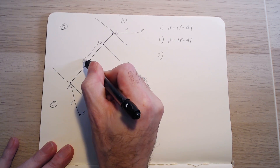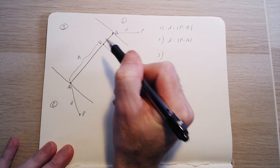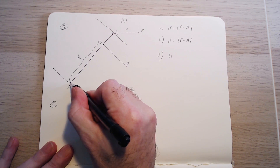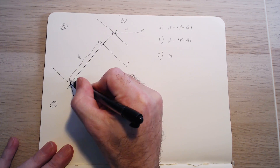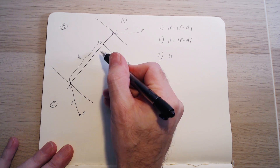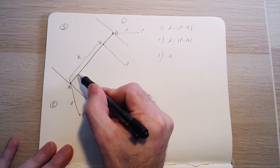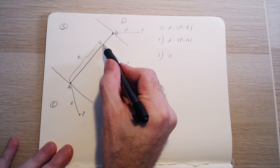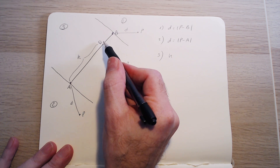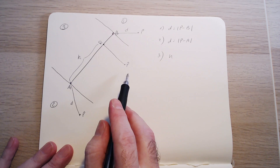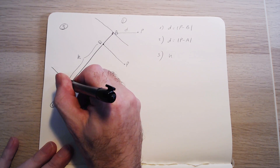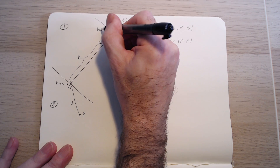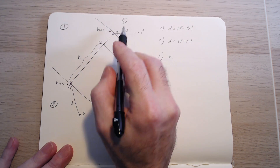We can define a parameter H that tells us where exactly Q is between A and B. For example, if H equals a half, Q will be exactly between A and B. For H equals a third, Q would be somewhere closer to A. This Q here is probably closer to H equals 0.8. Of course, if H equals 0, Q will be exactly at A, and H equals 1 corresponds to Q being exactly at B.